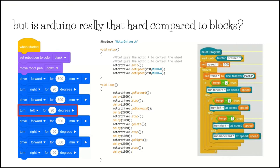On the right, we've got a list of blocks that are essentially mirroring what Arduino code can do. And so you can reduce that gap even further.